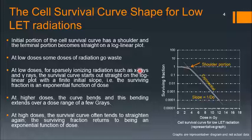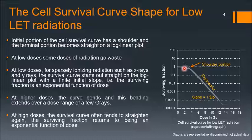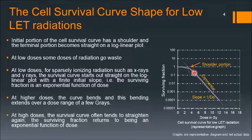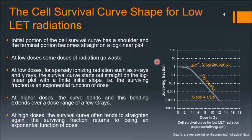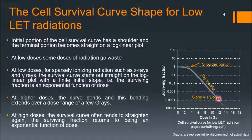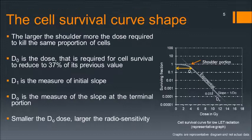At low doses for sparsely ionizing radiation such as x-rays and gamma rays, the survival curve starts out straight on a log-linear plot with a finite initial slope — that is, the surviving fraction is an exponential function of dose. As you go to a few grays, the curve starts bending, and the surviving fraction becomes less. At very high doses, the curve tends to straighten again, returning to being an exponential function of dose.